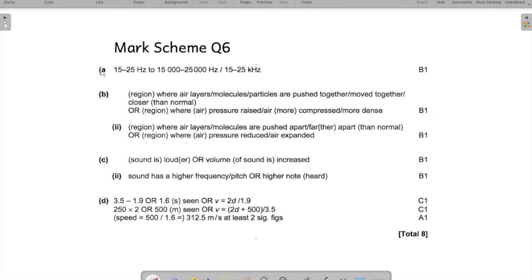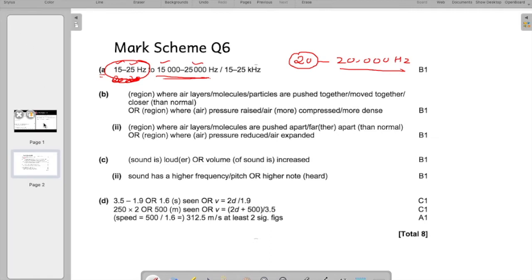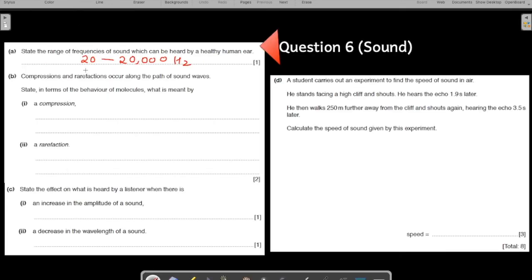As we answered for part A, 20 to 20,000 hertz. Your answer should be 20 to 20,000 hertz. Even if you say 15 to 15,000, 25 to 25,000, somewhere in that range is acceptable. But easier numbers to remember is 20 to 20,000 hertz. The lower number can be anything from 15 to 25, and the higher number can be anything from 15,000 to 25,000. Do not lose marks just because you fail to memorize such easy numbers.